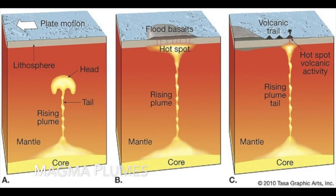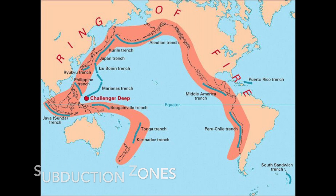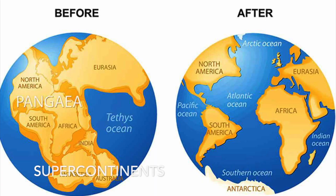Divergent boundaries form where existing plates are rifted apart, and it is hypothesized that this is caused by a series of mantle plumes. Subduction zones are assumed to form where accumulation of sediment at a passive margin leads to separation of oceanic and continental lithosphere. Supercontinents form and break up through these processes.